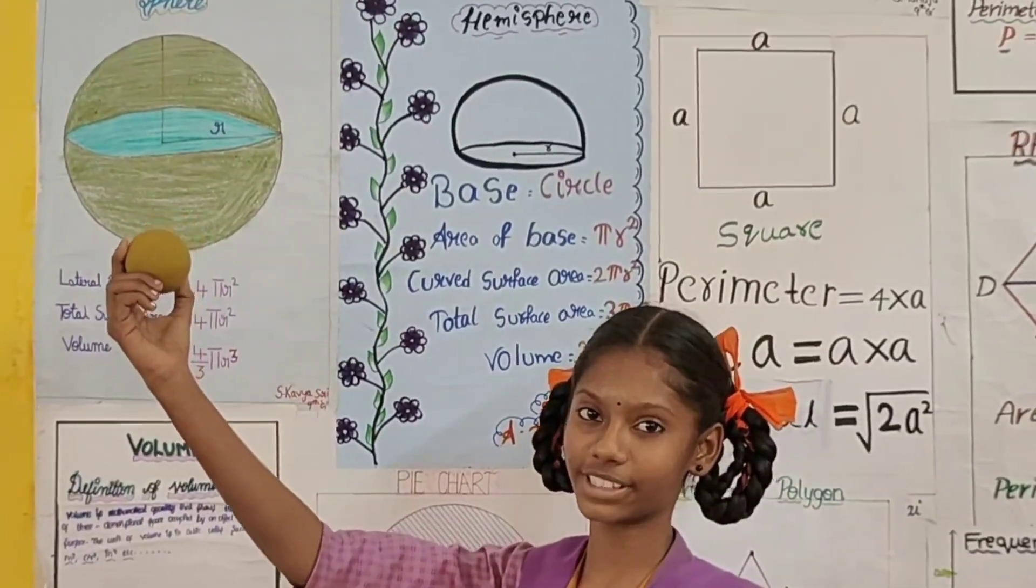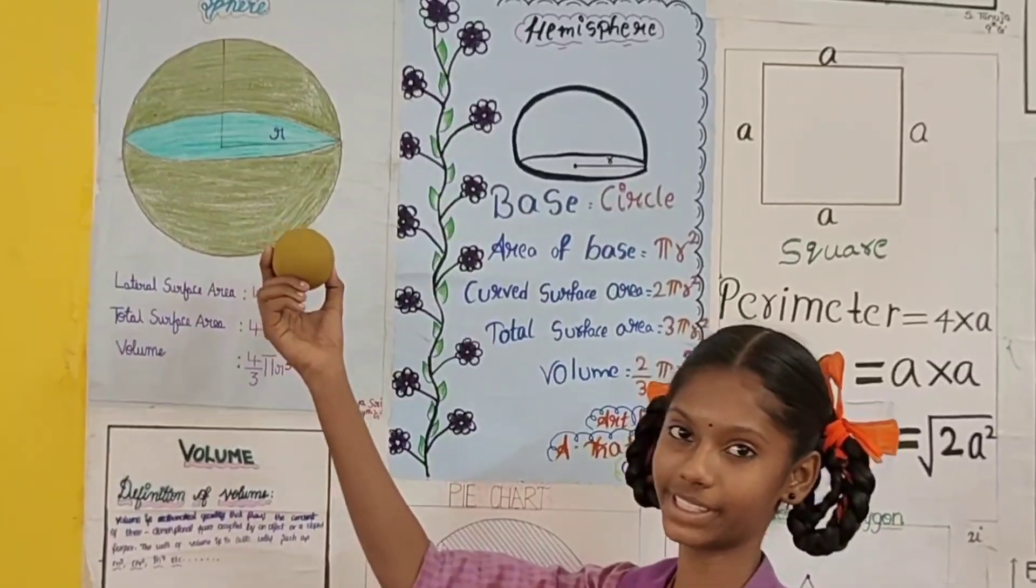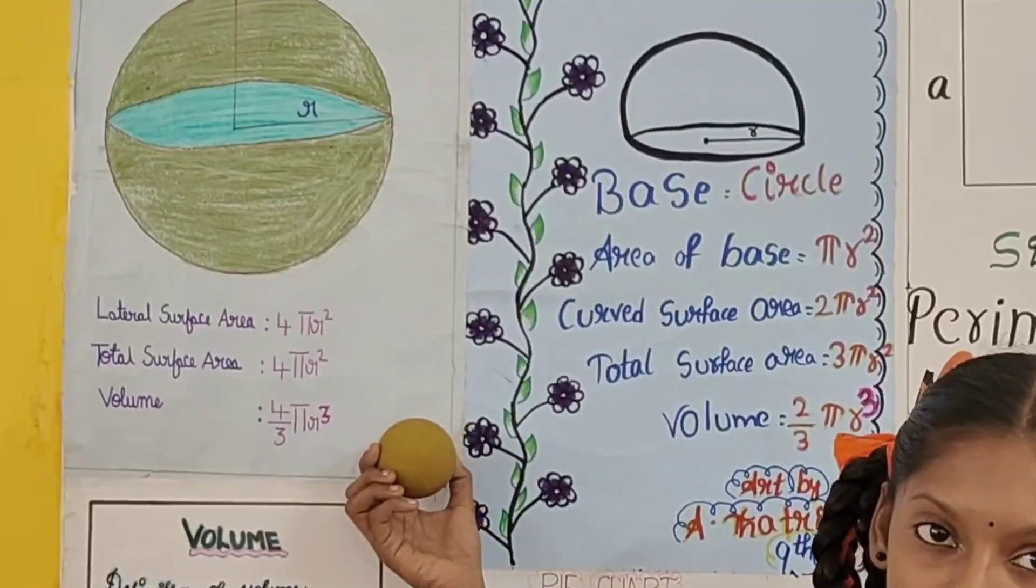Three-dimensional figures: sphere. Surface area 2 pi r square, volume 4 by 3 pi r cube. Three-dimensional figures: surface area 4 pi r square, volume 4 by 3 pi r cube.